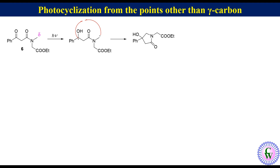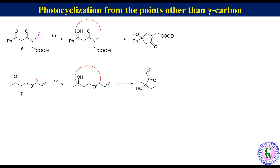One more example is compound 7. It doesn't have a gamma carbon but does have a delta carbon with hydrogen. So upon irradiation it will form a 1,5-diradical which will cyclize to produce a tetrahydrofuran derivative. In a few cases, cyclization occurs from the beta position even though hydrogen is present at the delta position.